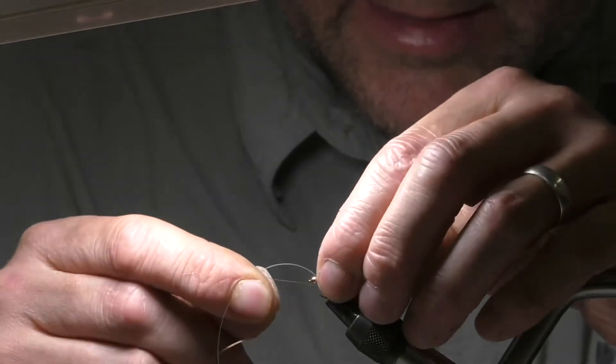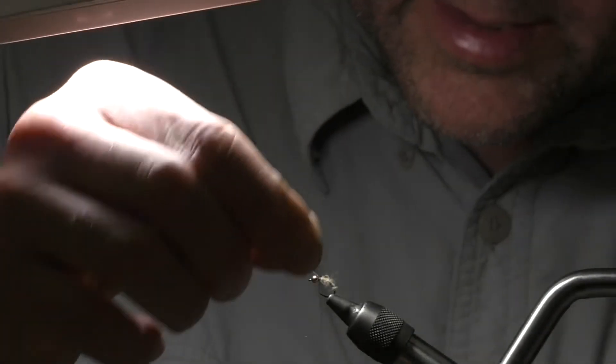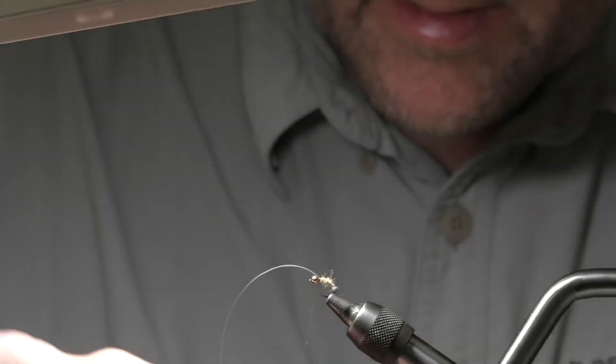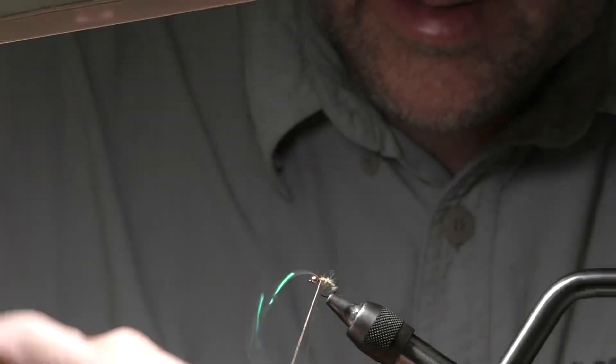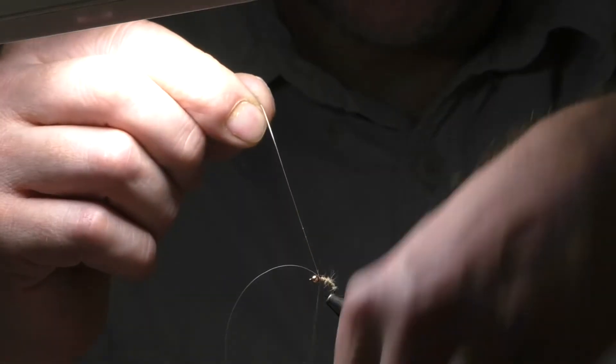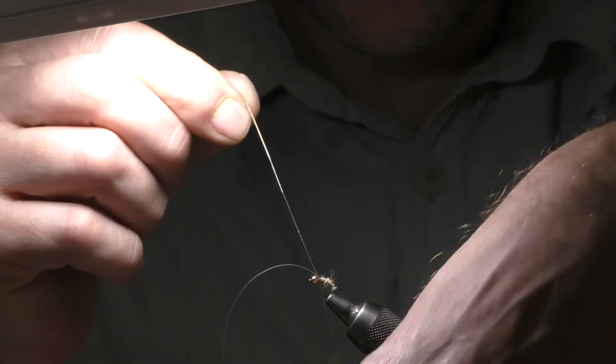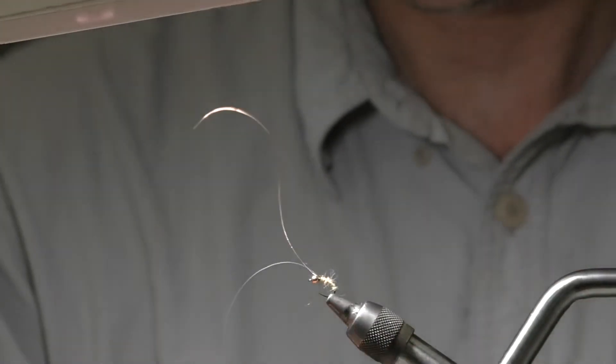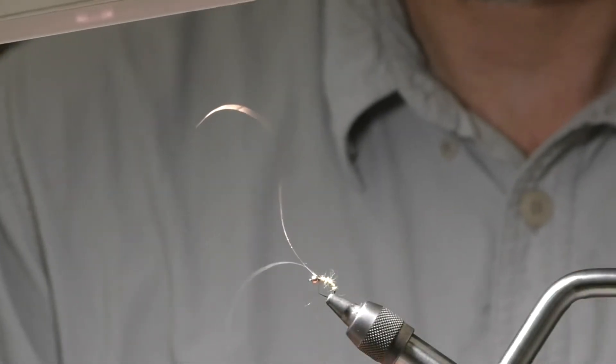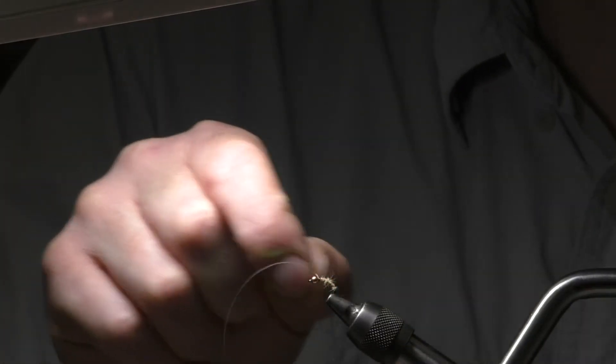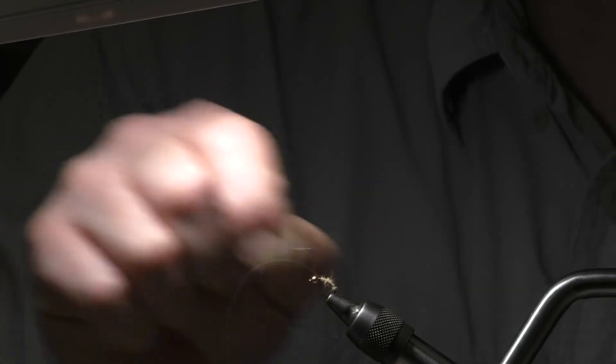What you've got to do is do a turn of rib just on the bare hook first, then creep your way up. Nice open turns. Check that your flashback is staying on the back of the hook shank.